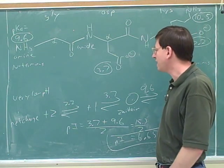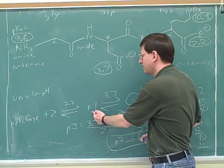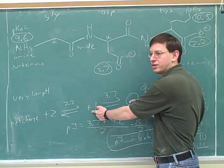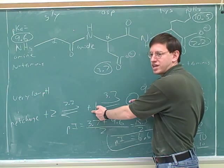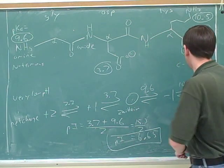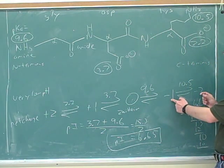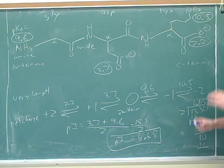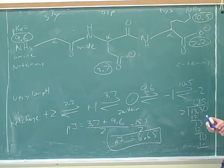Also, he could ask you what's the pH at which we have equal amounts of this form and this form? 3.7. What's the pH at which we have equal amounts of this form and this form? 10.5.